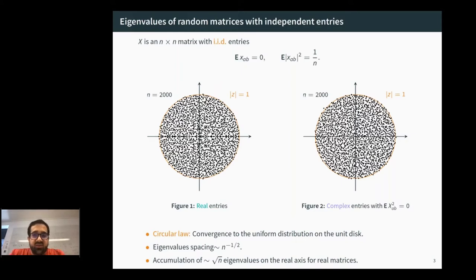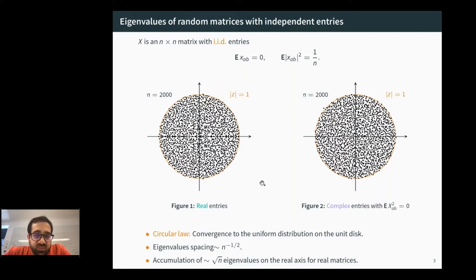Since we have n eigenvalues on an order-one set, the typical distance between neighboring eigenvalues is proportional to n^{-1/2}. Focusing on the real case, there is an accumulation of about √n eigenvalues on the real axis.